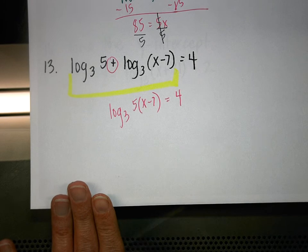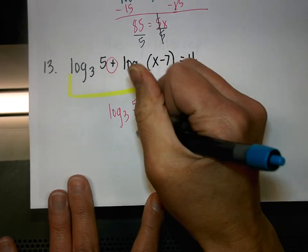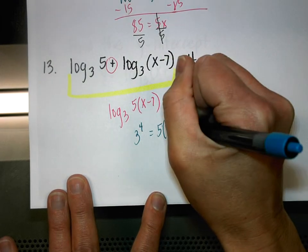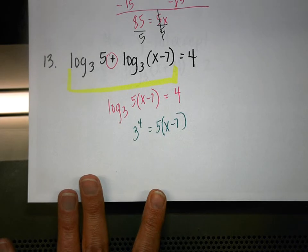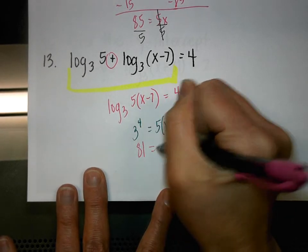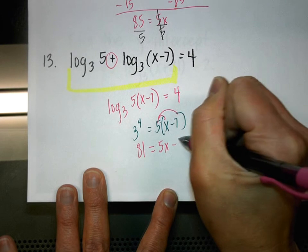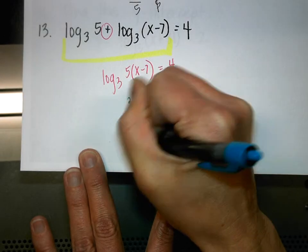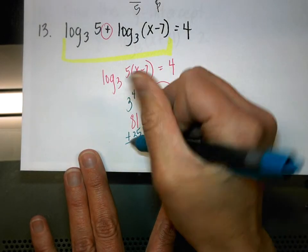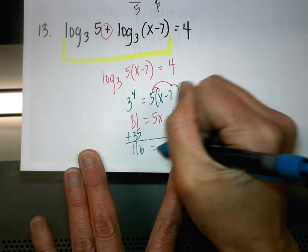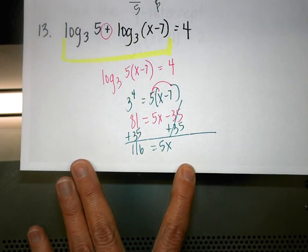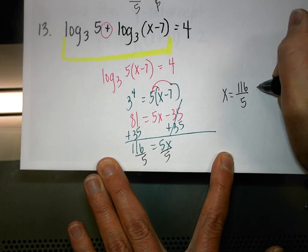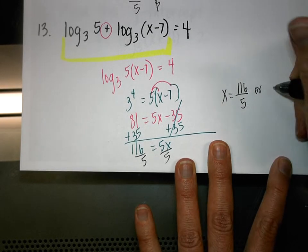Now that we have a single log, change to exponential form: 3 to the fourth power equals 5(x − 7). Simplify: 3 to the fourth is 81, and distributing the 5 gives 5x − 35. Add 35 to both sides to get 116 equals 5x, then divide by 5 to get X equals 116/5, or 23.2.